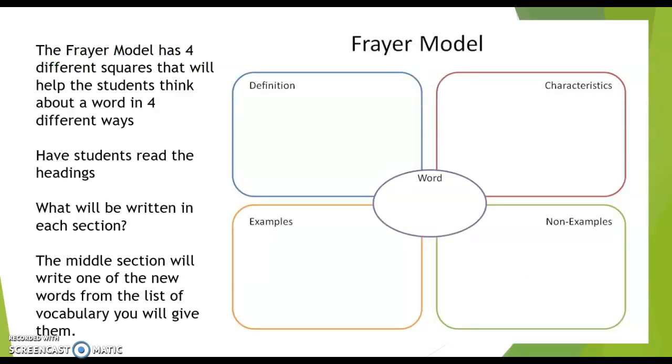The Frayer model has four different squares that will help the students think about a word in four different ways. You can have the students read the headings and then ask them what will be written in each section. In the middle section, they will write one of the new words from the vocabulary list you give them.